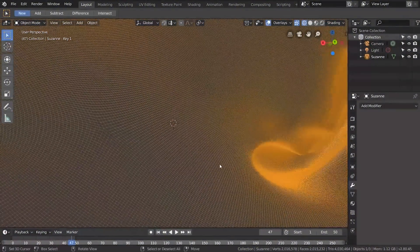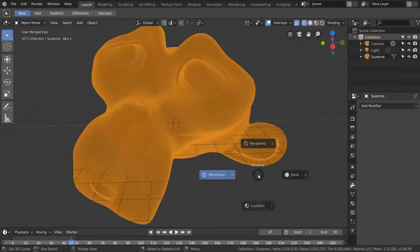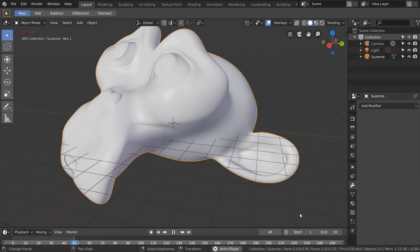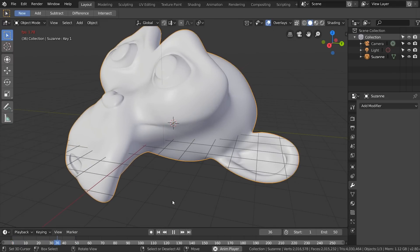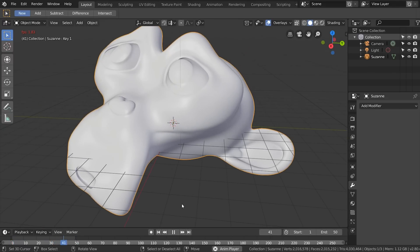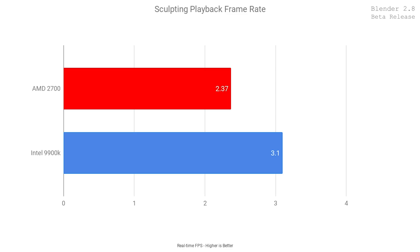After the simulation benchmarks, I wanted to throw in some real-time playback benchmarks to see which system handled real-time in Blender without getting laggy. I created a sculpting benchmark — a very high poly mesh being deformed in real-time. On the AMD system, sculpting playback came in at 2.37 FPS, and on the Intel system it came in at 3.1 FPS — approximately 27% faster on Intel, giving you a few more FPS in your viewport.